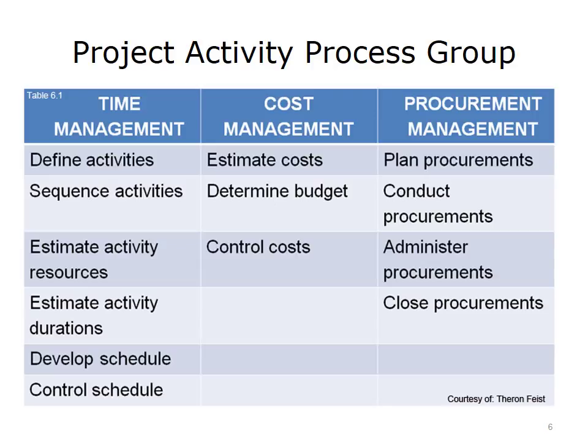A variety of activities will take place when developing time, cost, and procurement management plans. This table illustrates how these activities break down across the different process groups. When developing a time management plan, first define all project activities, then sequence these activities, estimate the activity resources required, estimate the duration of each activity, develop a schedule, and then control the schedule. In the cost management process group, estimate costs, determine budget, and control costs. The activities in procurement management involve planning procurements, conducting procurements, administering procurements, and closing procurements.